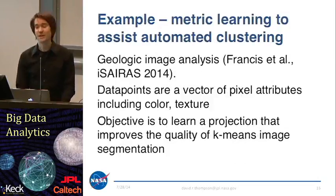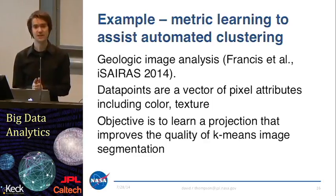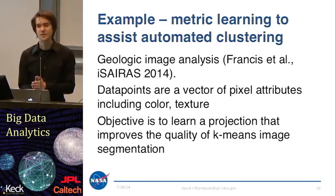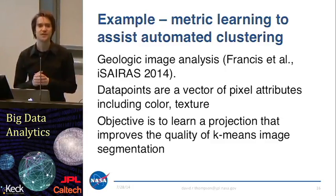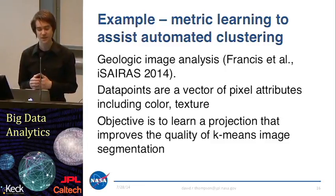I want to close with a quick example of how this can actually be used in practice. We're going to look at an application in automated image analysis — specifically, analysis of geologic images. This is work by Francis et al. in Icarus of 2014. The idea is to perform segmentation of images, basically clustering data points in a way that's relevant to the geologic content of the images. Our data cloud is made up of points which are vectors of pixel attributes, which might include color attributes as well as texture attributes, and the objective is to learn a projection that improves the quality of our image segmentation.